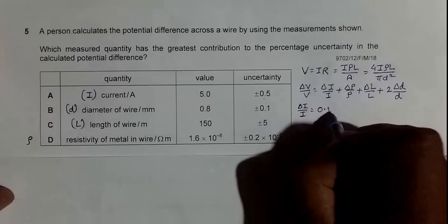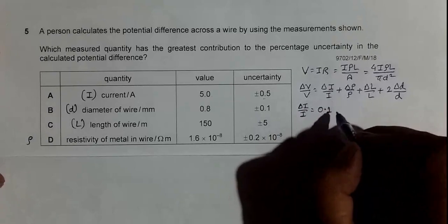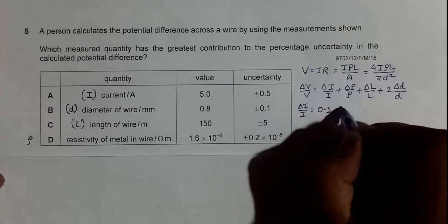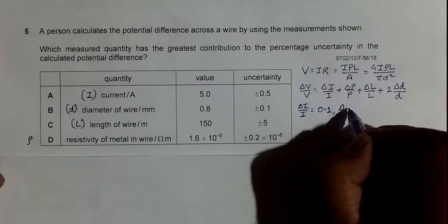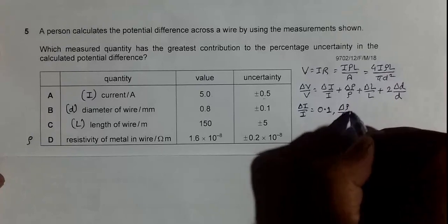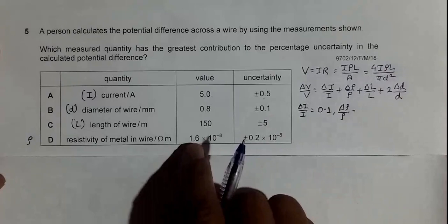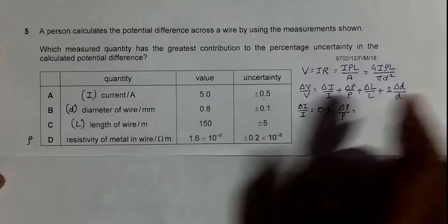Similarly, if I do Δρ by ρ, it will be 0.2 × 10⁻⁸ by 1.6, it will be around 0.125.